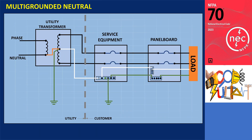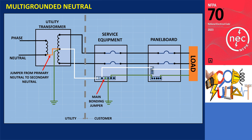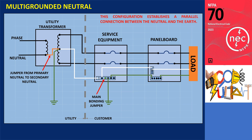The illustration depicts a utility transformer where the primary neutral is bonded to the secondary neutral, and both are connected to the earth. On the customer side, it is necessary to bond the neutral to the grounding electrode at the service equipment or disconnect. Consequently, the secondary neutral is connected for the second time, resulting in a parallel connection between the neutral and the earth. When the primary current leaves the transformer winding, it undergoes division. One path leads back to the substation through the multi-grounded neutral conductor. The neutral current flows through the bonding between the primary and secondary neutral conductors, establishing a parallel connection between the neutral and the earth, enabling electric current to continuously flow into the earth.